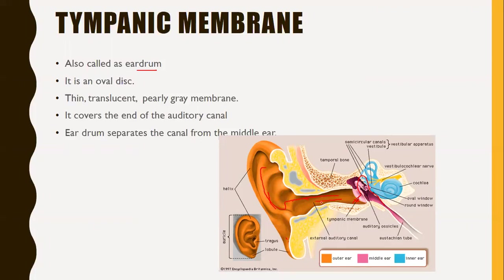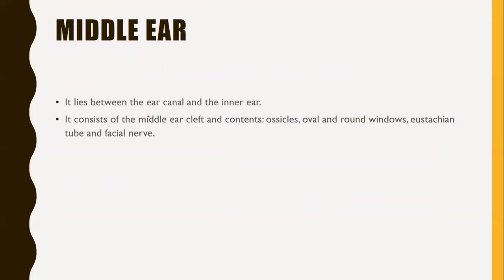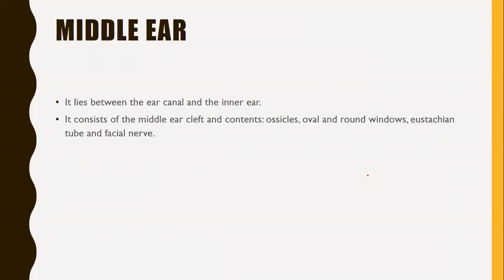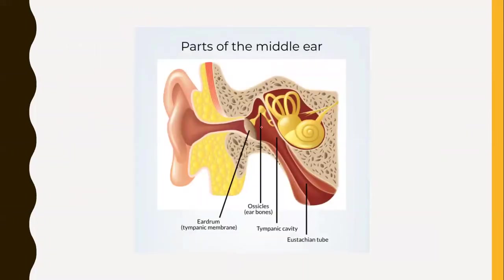Next is the middle ear. It lies between the ear canal and the inner ear. It consists of the middle ear cleft and its contents: the ossicles or ear bones, the oval and round windows, and the eustachian tube. In this picture you can see the eardrum, the tympanic membrane partition, the ossicles, the tympanic cavity, and the eustachian tube.